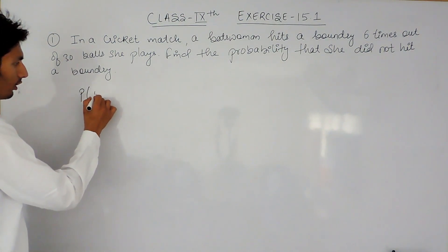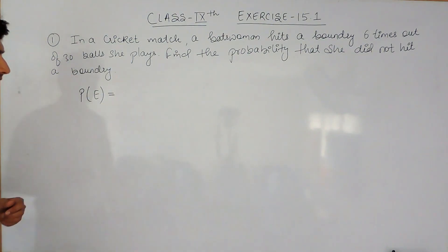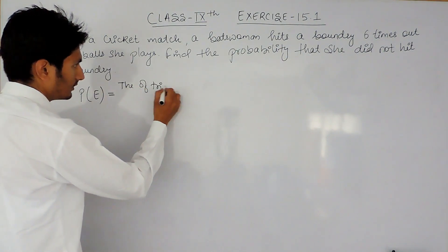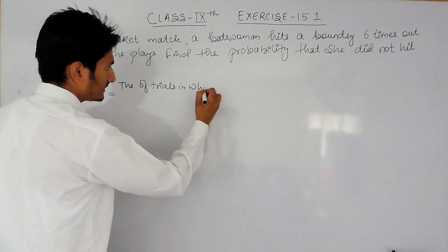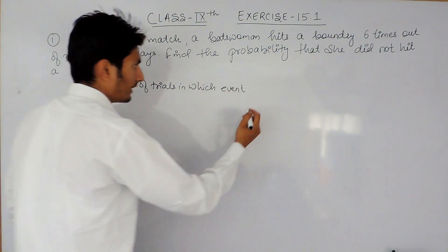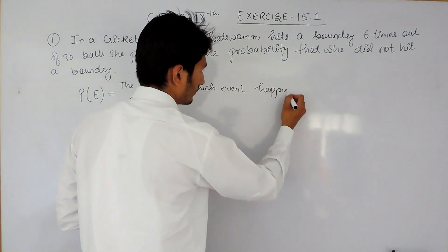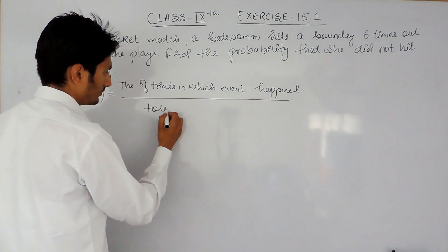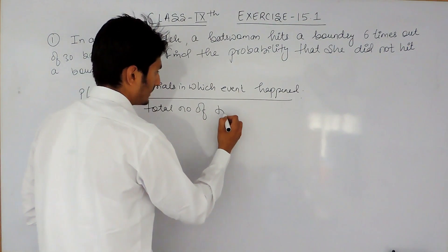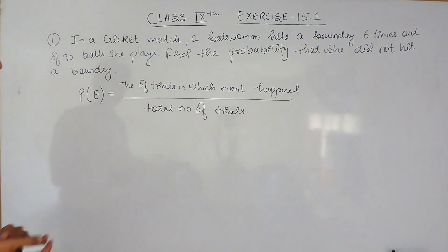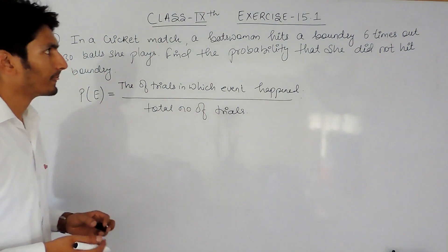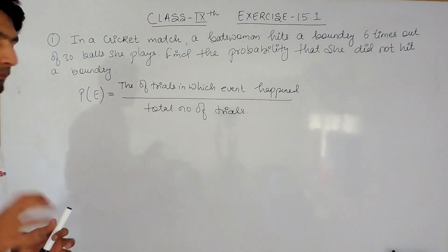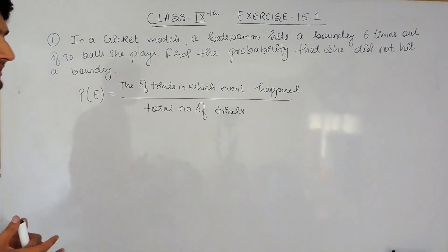To find the probability of an event, it is always equal to the number of tries in which this event happened upon the total number of tries. Now let's understand what 'tries' means in this context.